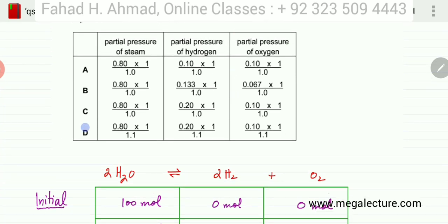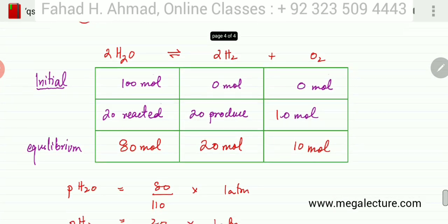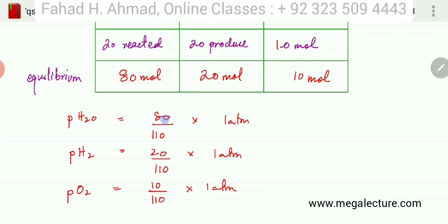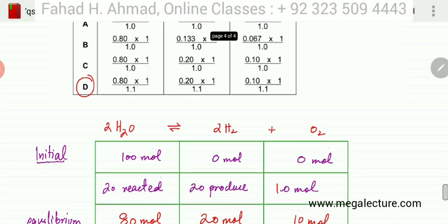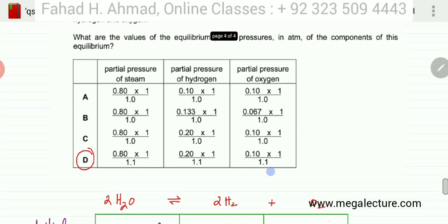And if you look carefully, then D is going to be the correct option because D gives me 0.8 over 1.1 into 1. So let's look at my expression. If I divide both values by 100, then this would actually be the same expression. It would be 0.8 over 1.1. So if I divide this by both values by 100, it's going to be 0.2 divided by 1.1. And the last one would be 0.1 divided by 1.1 into 1 atmosphere. And you can see that option D has the correct expression.